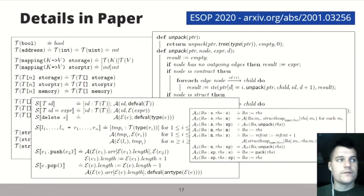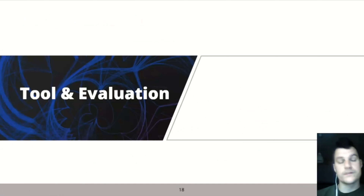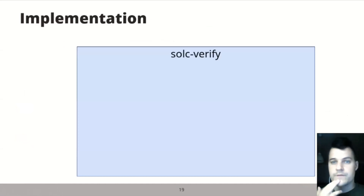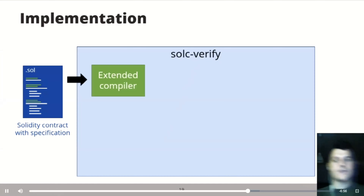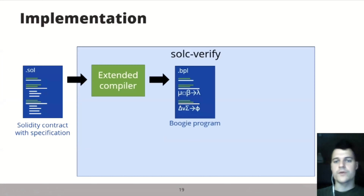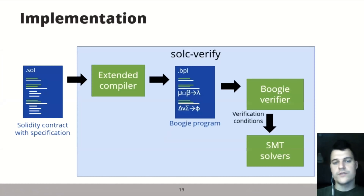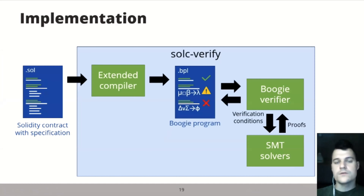These were just the key ideas — we have a paper at ESOP 2020 with all the details and corner cases formalized. We implemented this formalization in SolCVerify, a source-level modular verifier based on specification annotations. It takes a Solidity contract annotated with specifications, uses an extended version of the compiler to produce a Boogie program, which is given to the Boogie verifier to generate verification conditions checked by SMT solvers. The solvers then either prove correctness or give a counterexample.